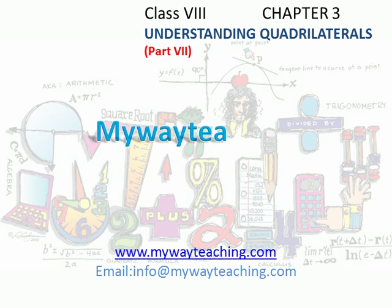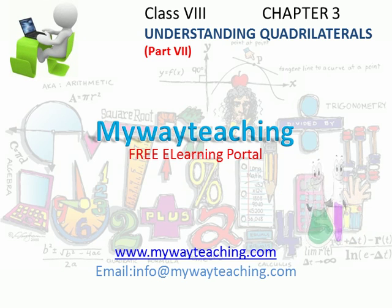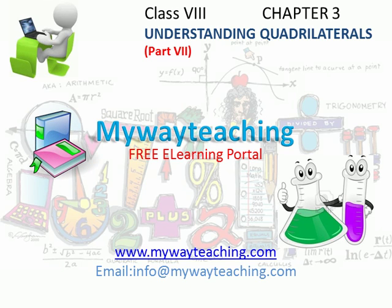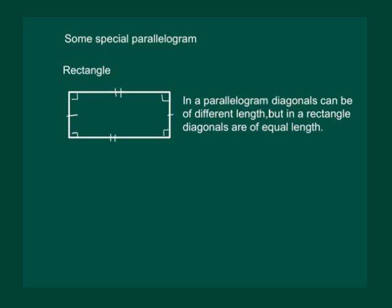Hello friends, this video is brought to you by mywaytteaching.com. We can see that a rectangle is another special type of parallelogram — its opposite sides are equal and also parallel. Because all the vertices have an angle of 90 degrees, a rectangle is a parallelogram with a key difference.